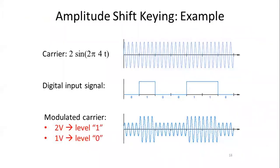An example has been given: if the signal is 2 sin(2π × 4t), remember it says 2πfct. So fc becomes 4 (the frequency) and 2 indicates the amplitude. So the amplitude of the carrier will be 2 and the frequency will be 4. Based on that, sampling will be done and you will have a digital sequence. Here, 0 is represented as one particular voltage — say 1 volt — and 1 indicates 2 volts. So 2 volts is passing. That is how ASK represents a signal.